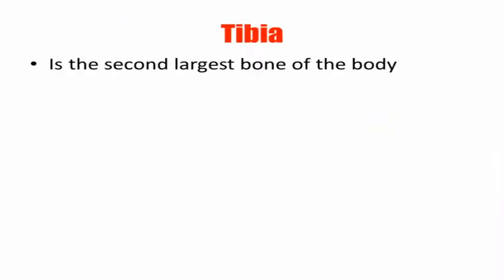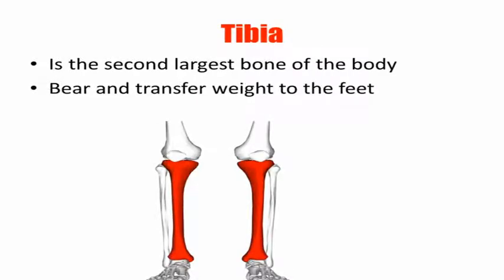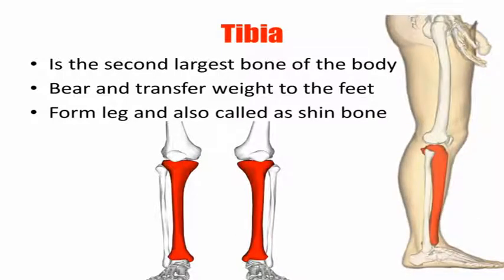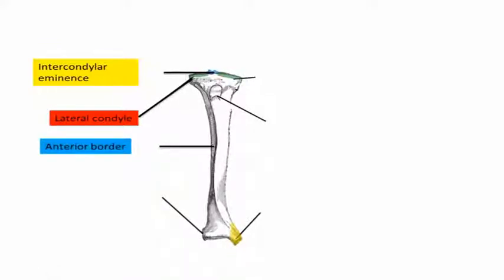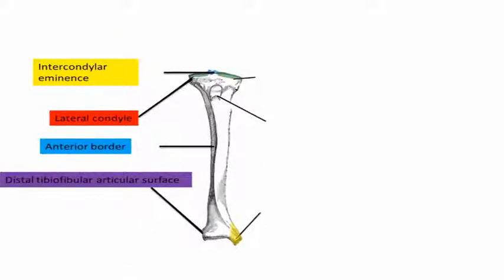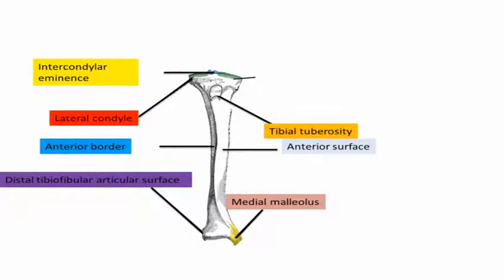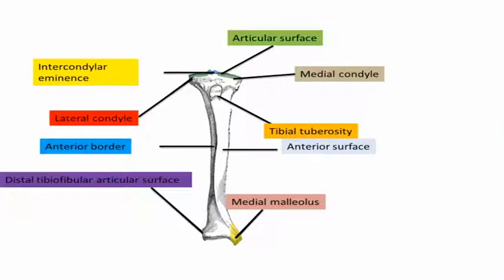Now we will learn about the tibia. The tibia is the second largest bone of the body. It bears weight and transfers it to the feet. It forms the leg and is also called the shin bone. Its landmarks include the tibial eminence, the lateral condyle, the shaft with its anterior border, the distal articular surface, the medial malleolus, the anterior surface, the tibial tuberosity, and the medial condyle — where the femur attaches to the tibia, forming the knee joint.